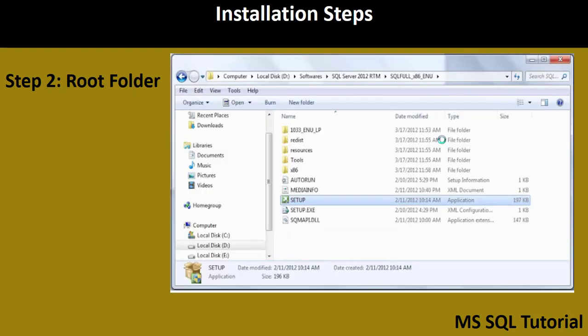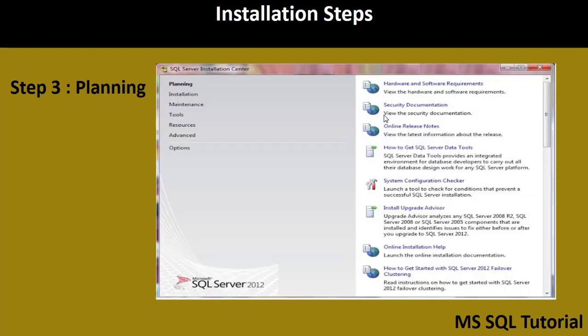As Step 2, go to the root folder where you downloaded SQL Server 2012. You will find a file called 'setup' — double-click on it. As Step 3, a window will appear for Planning, where you can find hardware and software requirements, security documentation, online release notes, system configuration checker, install upgrade advisor, and other resources needed for installation.